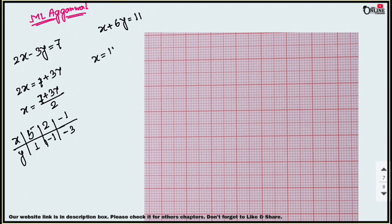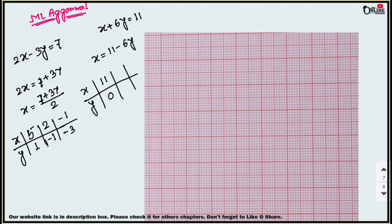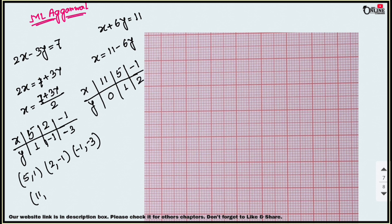For the second equation x plus 6y equal to 11, rearrange to x equals 11 minus 6y. If y equals 0, x equals 11. If y equals 1, x equals 5. If y equals 2, x equals minus 1. Now plot all six points: for line 1 — (5, 1), (2, −1), (−1, −3); for line 2 — (11, 0), (5, 1), (−1, 2).